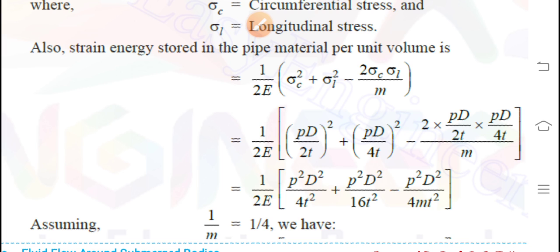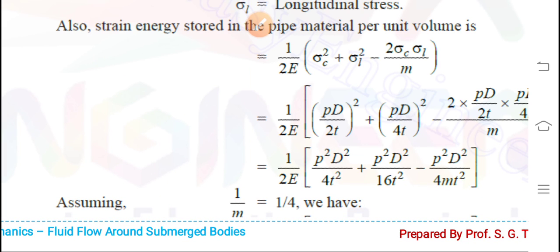Continuing the expression: minus 2 times (pD/2t) multiplied by sigma_l, which is (pD/4t). This equals (1/2E) times [p²D²/4t² + p²D²/16t² minus p²D²/(4mt²)]. Assuming 1/m equals 1/4, we proceed to simplify the strain energy per unit volume.